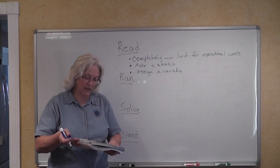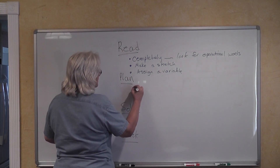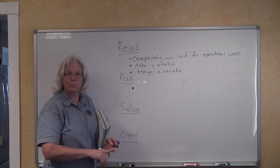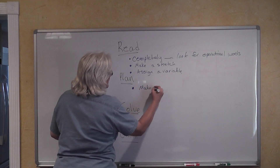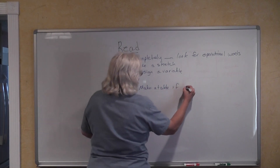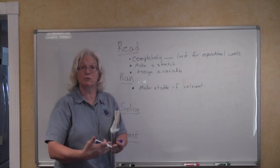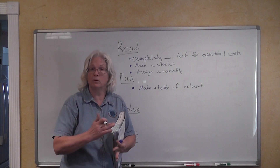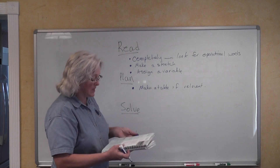The next thing you're going to need to do is plan. Sometimes you're going to make a table. You're going to learn in chapter 4 to do this especially when you're working on distance problems, coin problems, percentage problems, or mixture problems. So you're going to make a table if it's relevant — meaning if it makes sense and is useful to do. With rate problems, mixture problems, and coin problems, you are definitely going to want to make a table.